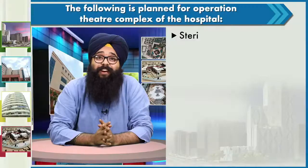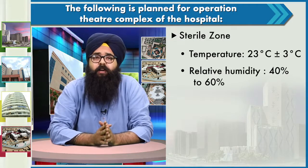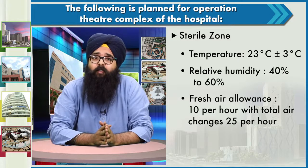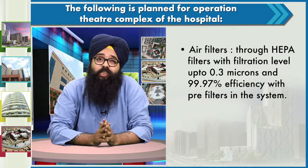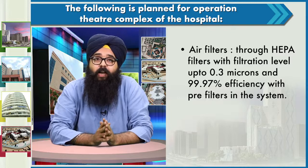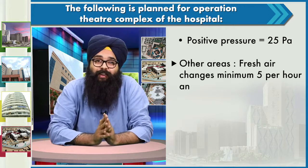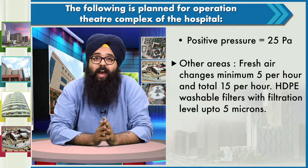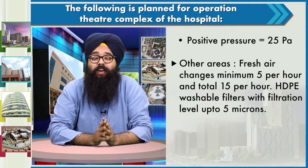We have to create a sterile zone for the operation theatre complex. Temperature should be 23°C plus or minus 3 degrees, relative humidity 40 to 60 percent, fresh air allowance of 10 air changes per hour with total air changes of 25 per hour as per ASHRAE. Air filters must be HEPA filters with filtration level up to 0.3 microns and 99.97% efficiency with pre-filters in the system, meaning even bacteria can potentially be stopped. HDPE washable filters with filtration up to 5 microns should also be provided for other areas, with a minimum of 5 fresh and 15 total air changes per hour.